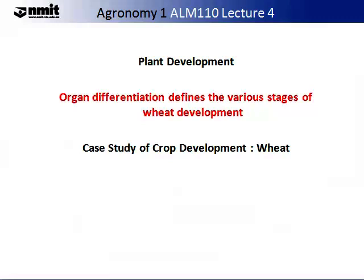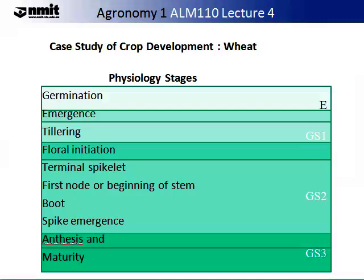Plant development can be defined as the differentiation of organs which defines the various stages of plant development. We are going to take the case study of crop development of wheat. The stages can be distinguished by the process occurring in the plant: germination, emergence, tillering, floral initiation — also called double ridge — terminal spikelet, first node or beginning of stem, boot, spike emergence, and anthesis — also known as flowering — and maturity.